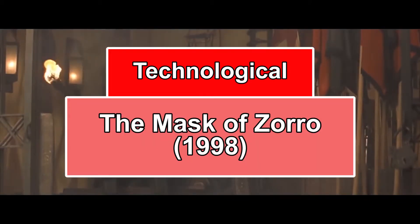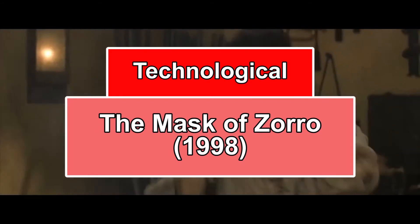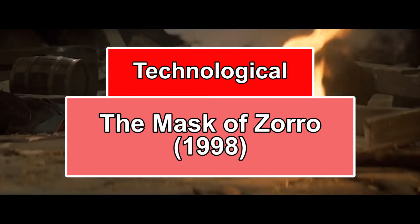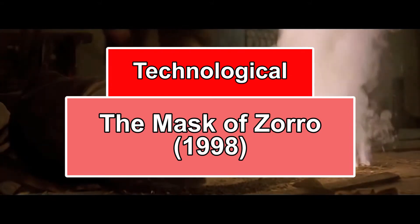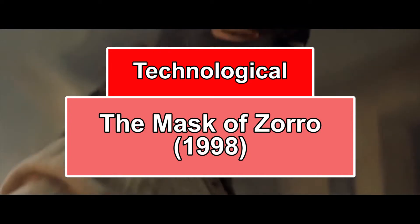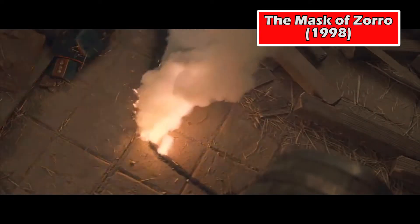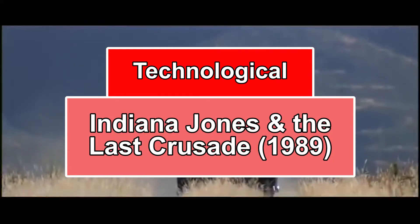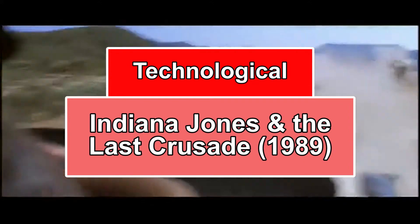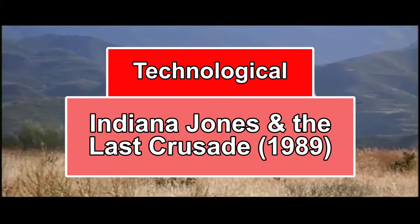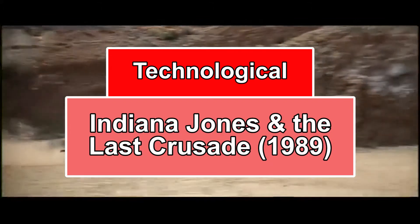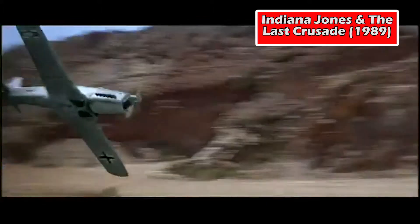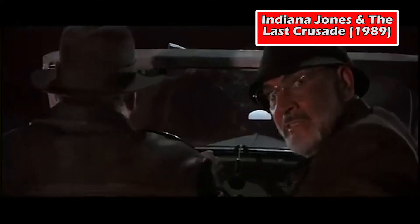One of the main technological advantages that The Mask of Zorro had over older films was its effects. Large explosions, green screening, and other effects that pull the movie together continued to be improved to make everything look more realistic, allowing the movie to reach its full potential. Similarly, Indiana Jones and The Last Crusade used the same large explosions and green screening to give the audience a more realistic view without actually having to go to a location or perform a specific action. With these effects, we see the progression of older films into the films we see today.